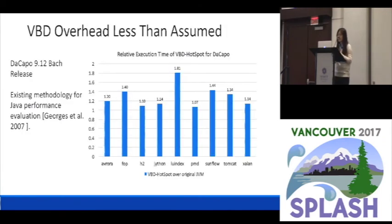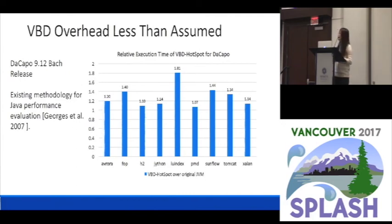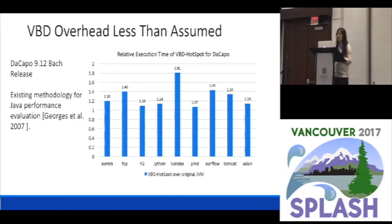So let's talk about the results. We first tested the overhead of our VBD HotSpot on the DaCapo benchmarks, which are standard benchmarks for testing Java performance. We're using an existing methodology of Java performance evaluation — specifically from a 10-years most influential work paper. On the right is the result, showing the relative execution time of VBD HotSpot against the original JVM. For example, for Aurora, the relative execution time is 1.20, meaning the overhead is 20%. The lower the better. The average overhead of VBD HotSpot over the original JVM is 28%.